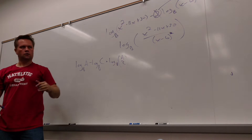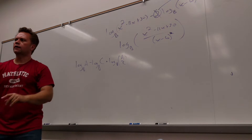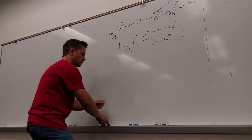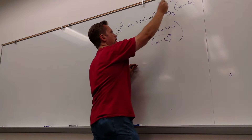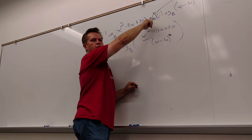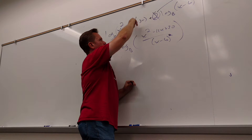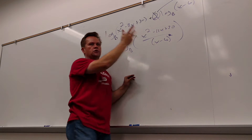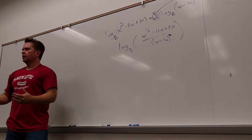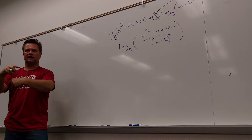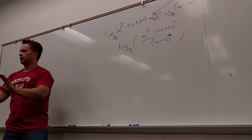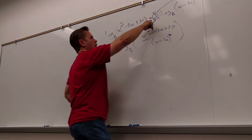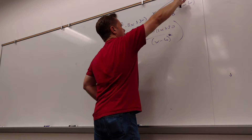A side note: couldn't somebody have taken negative 2 up instead? Then it would become a plus and X minus 6 to the negative 2 would go to the bottom. Math has to be consistent — if it doesn't work every way you could legally do it, then it's not a valid process. You can make every log positive by bringing up a negative power, and those would end up on the bottom.